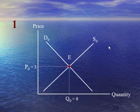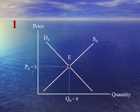Case number 1 shows no change in demand and supply. This is a simple equilibrium point where E is the equilibrium point where the demand curve intersects the supply curve, and market equilibrium price is 3 and market equilibrium quantity is 8.